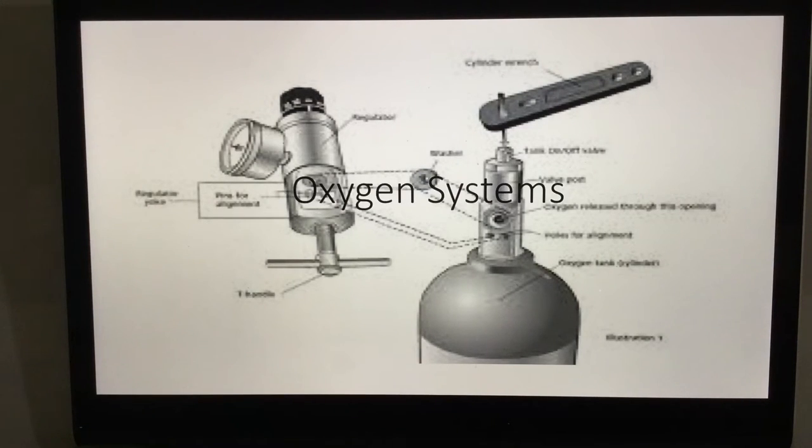The tank has a color scheme that is usually green or green with silver. It has a special placard on it with a yellow diamond that says oxidizer or oxygen, and that label should say USP.